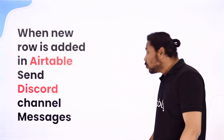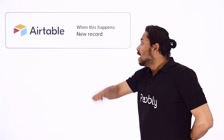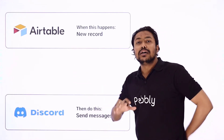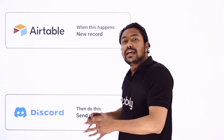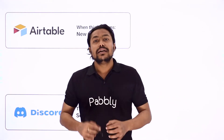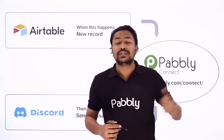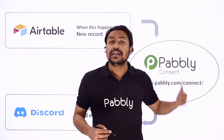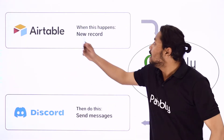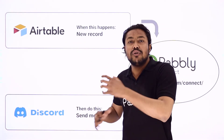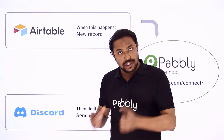What are we going to do here? First, we are going to create a new record in Airtable, create rows, and then that record will automatically be sent to the desired Discord channel as a message. To do this, we are going to use Pabbly Connect, an integration and automation software service, which will connect Airtable and Discord together so that this workflow runs as an automated process.